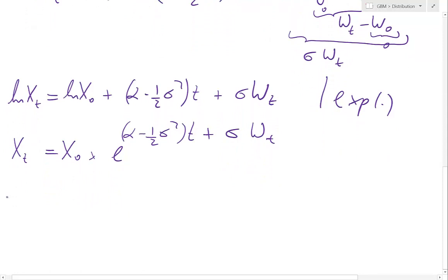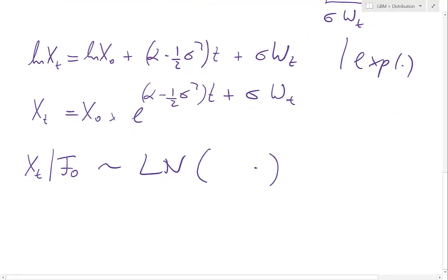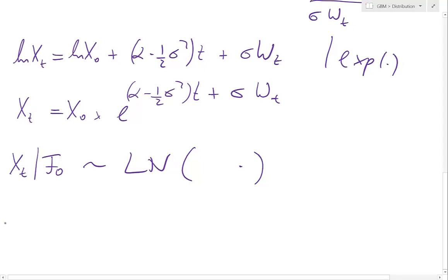So we can therefore say that Xt conditional on F0 has that type of distribution. So we can either say that thing is log normal, or what I would say, I would say that the log, go from up here, the log of Xt conditional on F0, that is just normal. Yeah, so log returns would be normal.